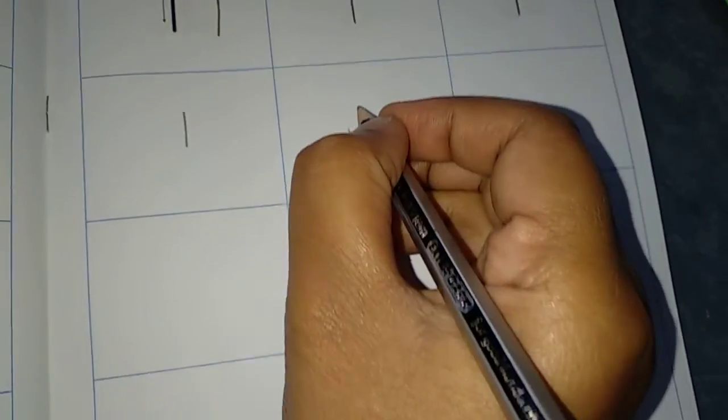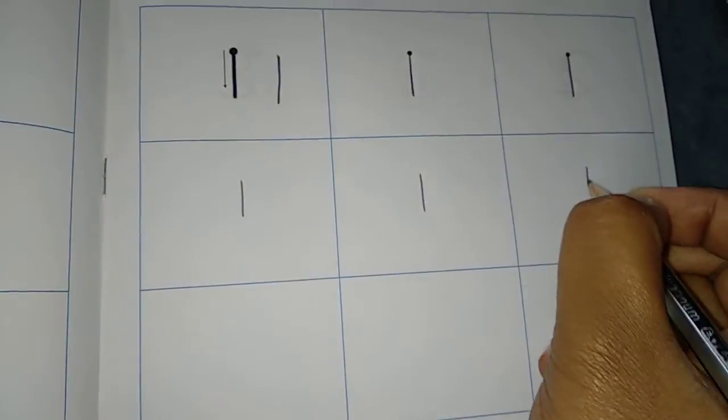So write all of you here. Number 1, 1, 1. Like this. All of you write in page number 31.